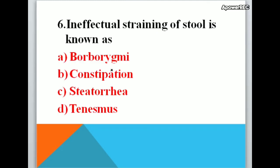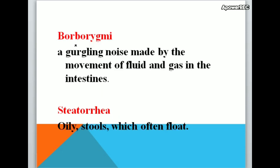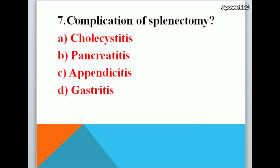Next question: Ineffectual straining of stool is known as — A. borborygmi, B. constipation, C. steatorrhea, D. tenesmus. Correct answer is tenesmus — ineffectual straining of stool. Borborygmi is a gurgling noise made by the movement of fluid and gas in the intestine. Steatorrhea refers to oily stools which often float.